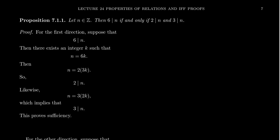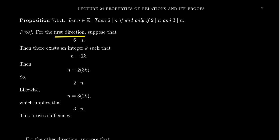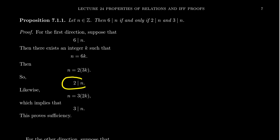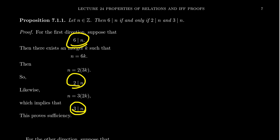Let N be an integer. We're going to prove that six divides N if and only if two divides N and three divides N. First, prove sufficiency: if six divides N, then two divides N and three divides N. Suppose six divides N. By divisibility, there exists some integer K such that N equals 6K. Then N equals 2·(3K), and since 3K is an integer, two divides N. Factoring differently, N equals 3·(2K), and since 2K is an integer, three divides N. This shows sufficiency.